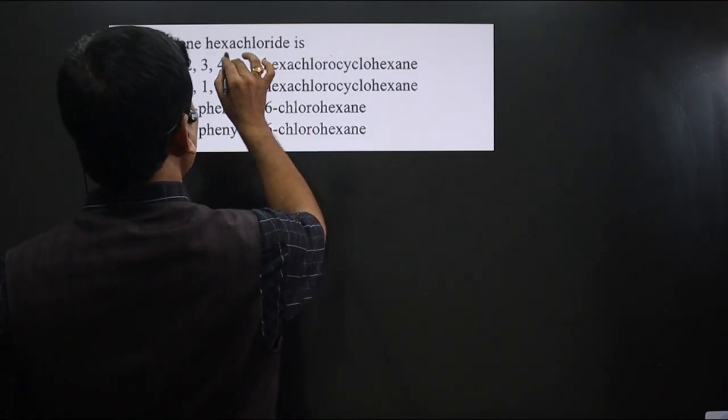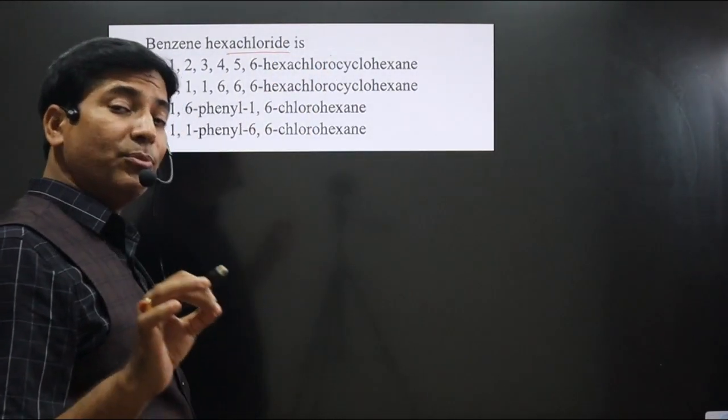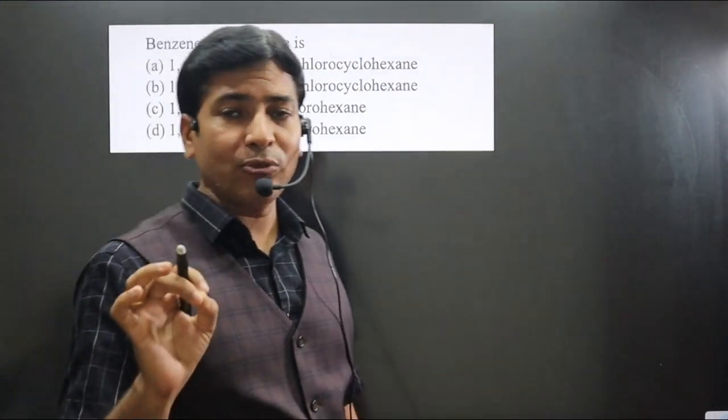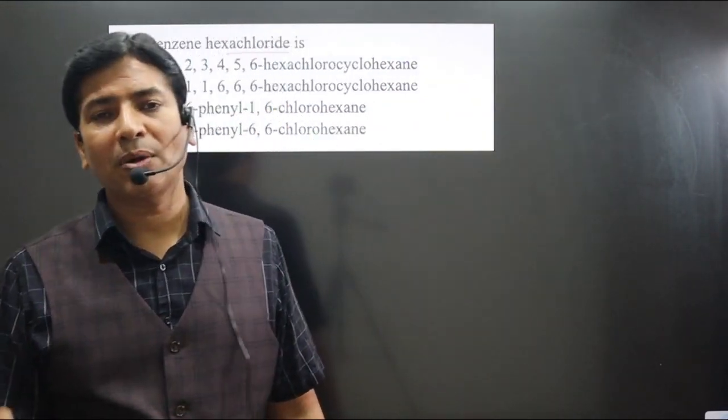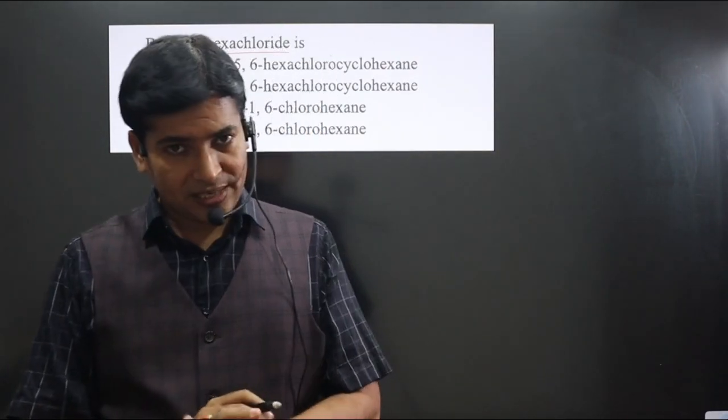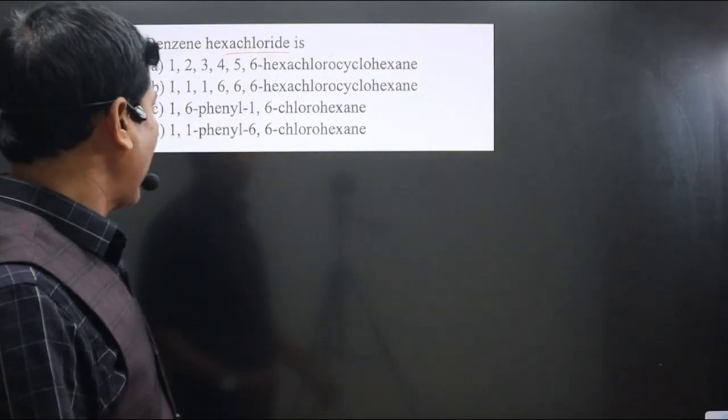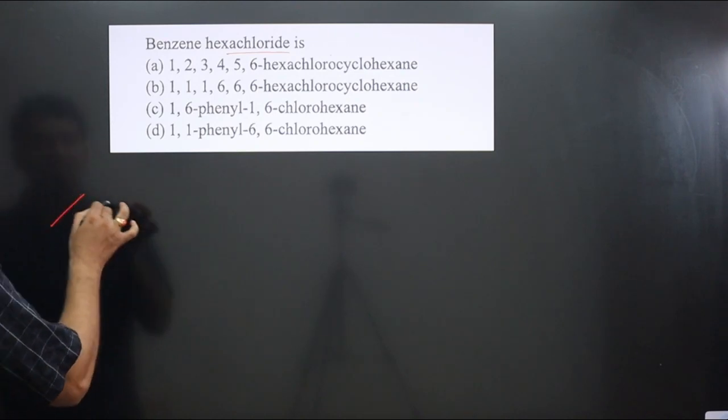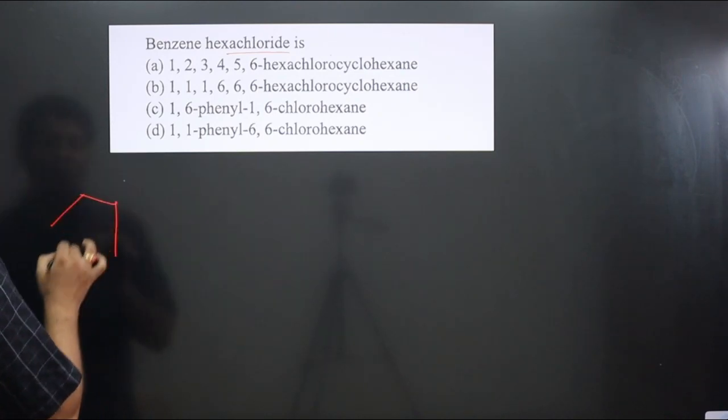The question says benzene hexachloride is. Always keep in mind that another name of benzene hexachloride is perchlorobenzene. This compound is formed when benzene ring undergoes halogenation reaction.